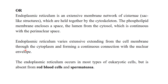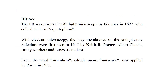The endoplasmic reticulum occurs in most types of eukaryotic cells, but is absent from red blood cells and spermatozoa. Endoplasmic reticulum is totally absent in prokaryotes.